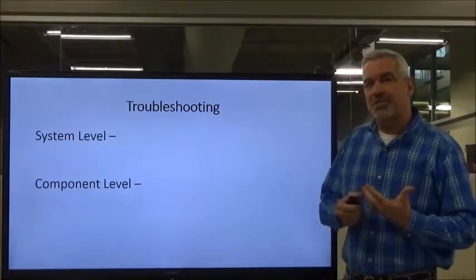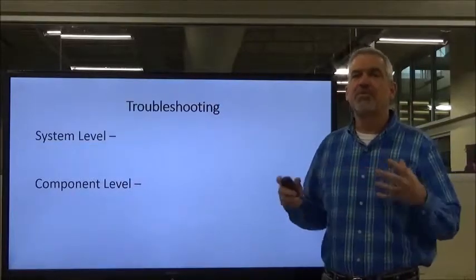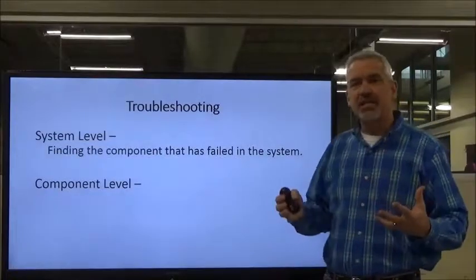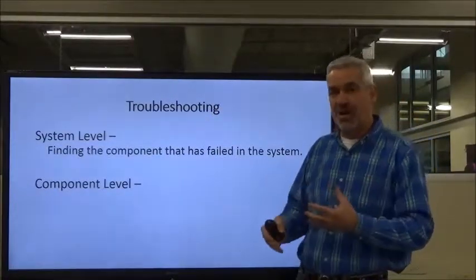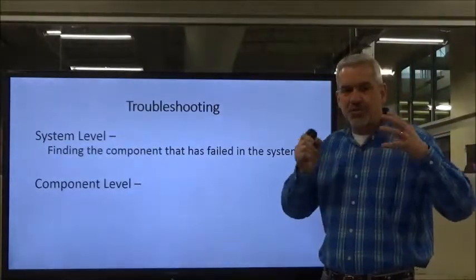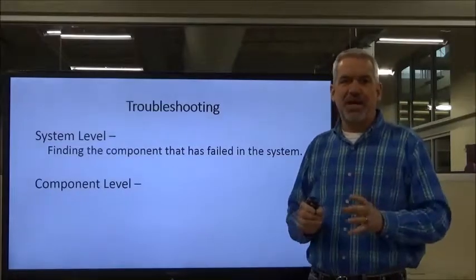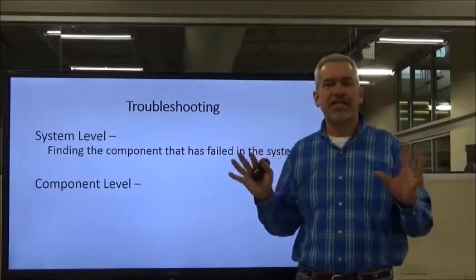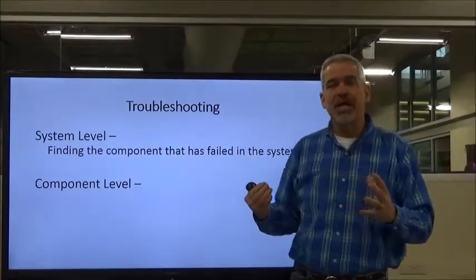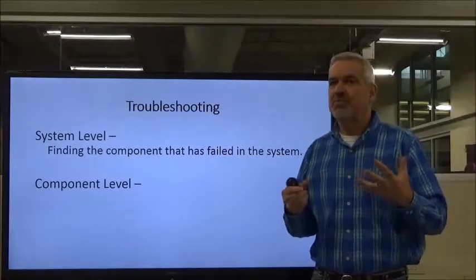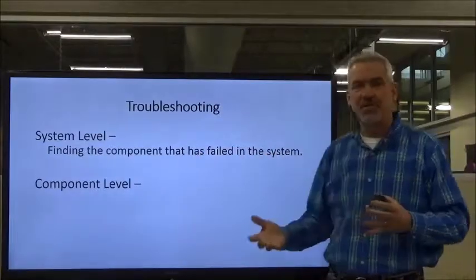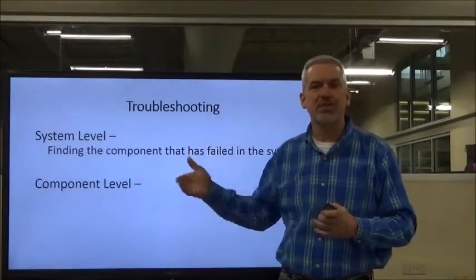There are two levels of troubleshooting we're going to discuss. First is the 10,000-foot view — the system level. That is finding the component that's failed in the system giving you the problems. When you first approach the machine, you're not going to start trying to look for components you feel are bad. First thing: back up, take that 10,000-foot view, get a holistic approach. Pull the operator in and have them give you as much information as they can. You're looking for the component that's failed in the system.